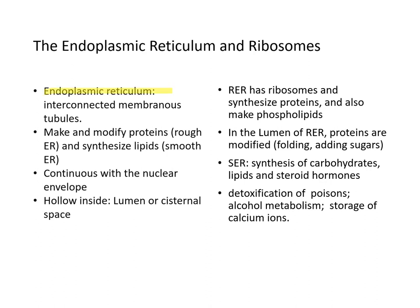The endoplasmic reticulum is an interconnected network of membranous tubules. It makes and modifies proteins if it's rough ER, and synthesizes lipids if it's smooth ER. It is continuous with the nuclear envelope, and its hollow interior is called the lumen or cisternal space.